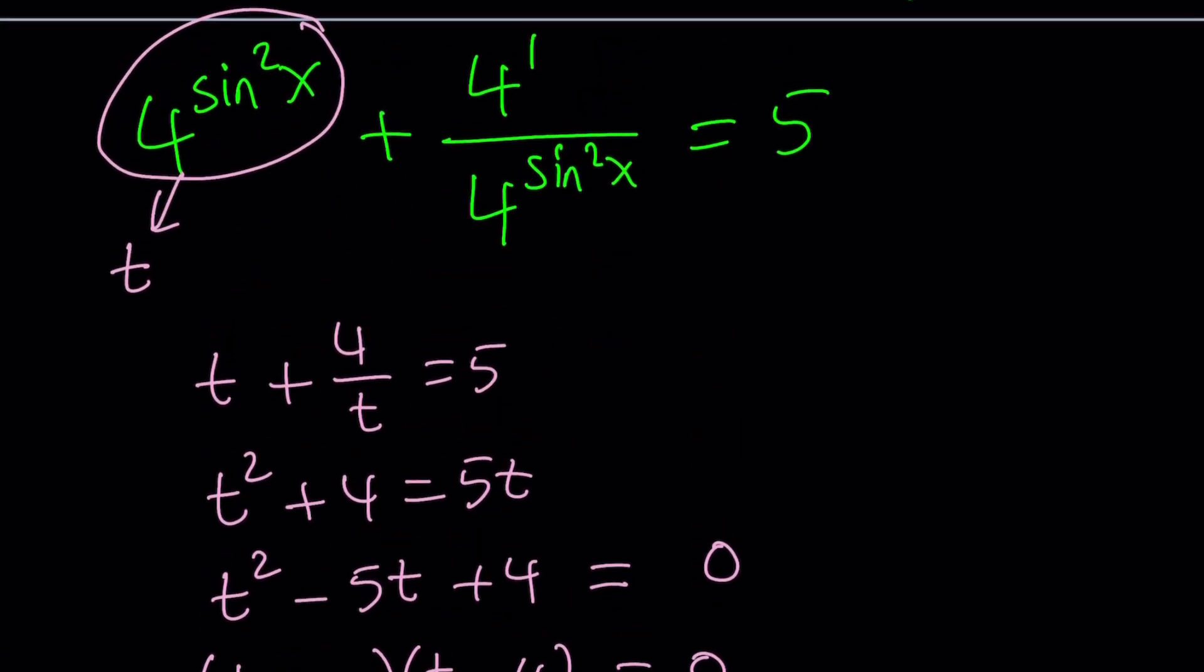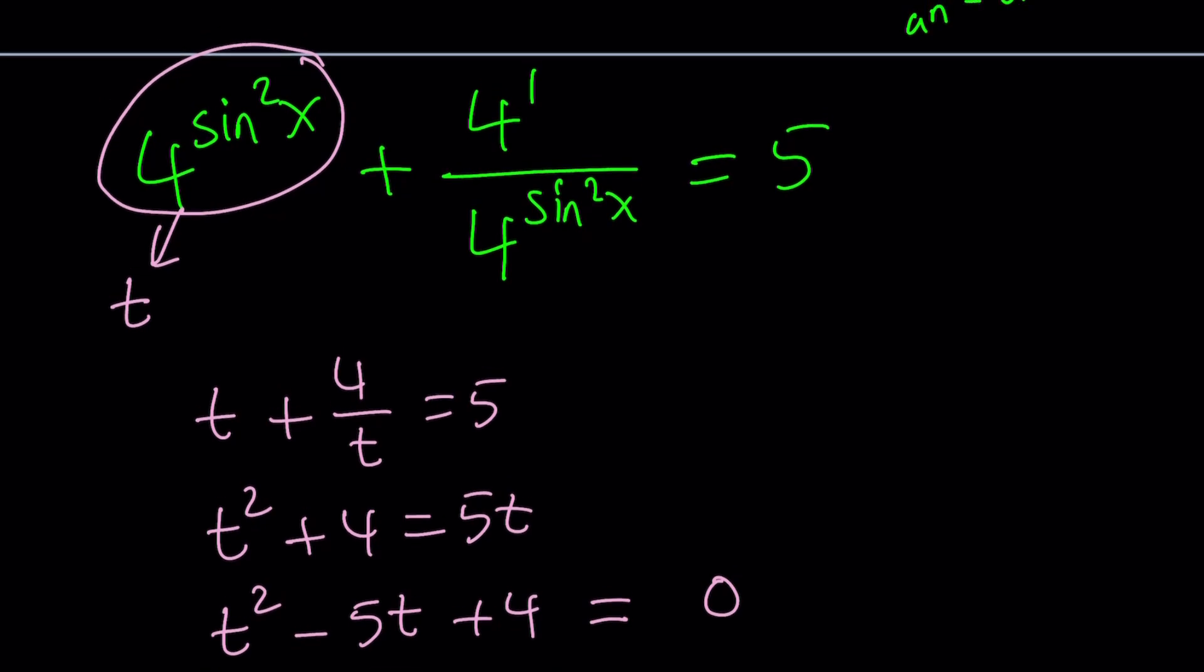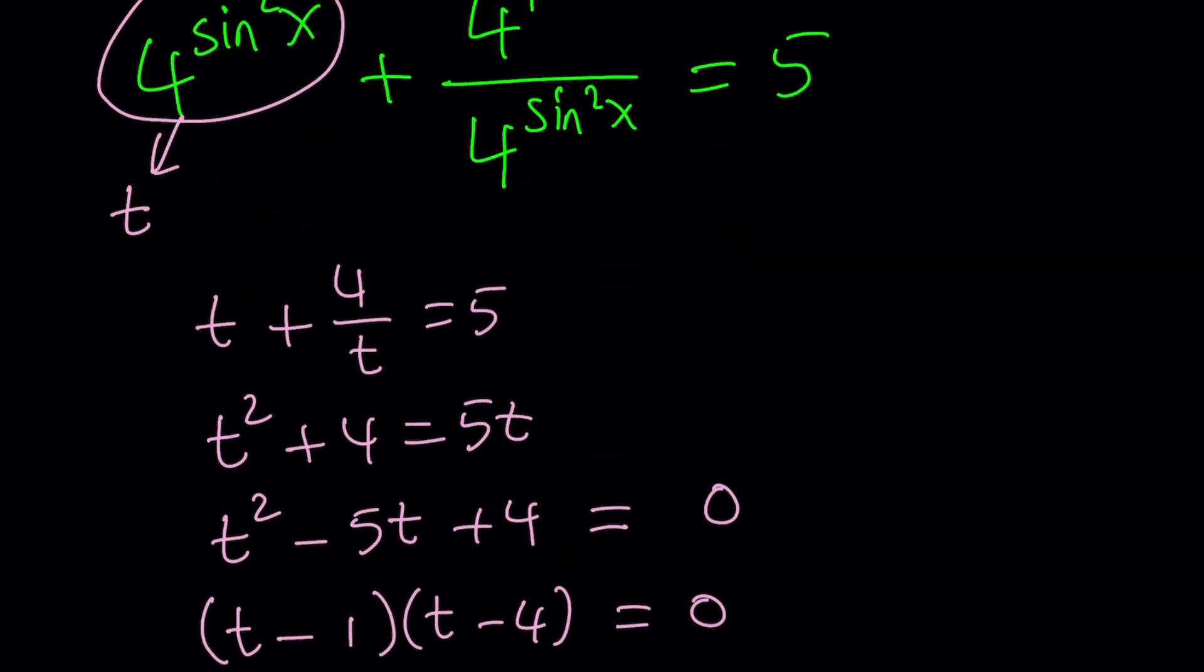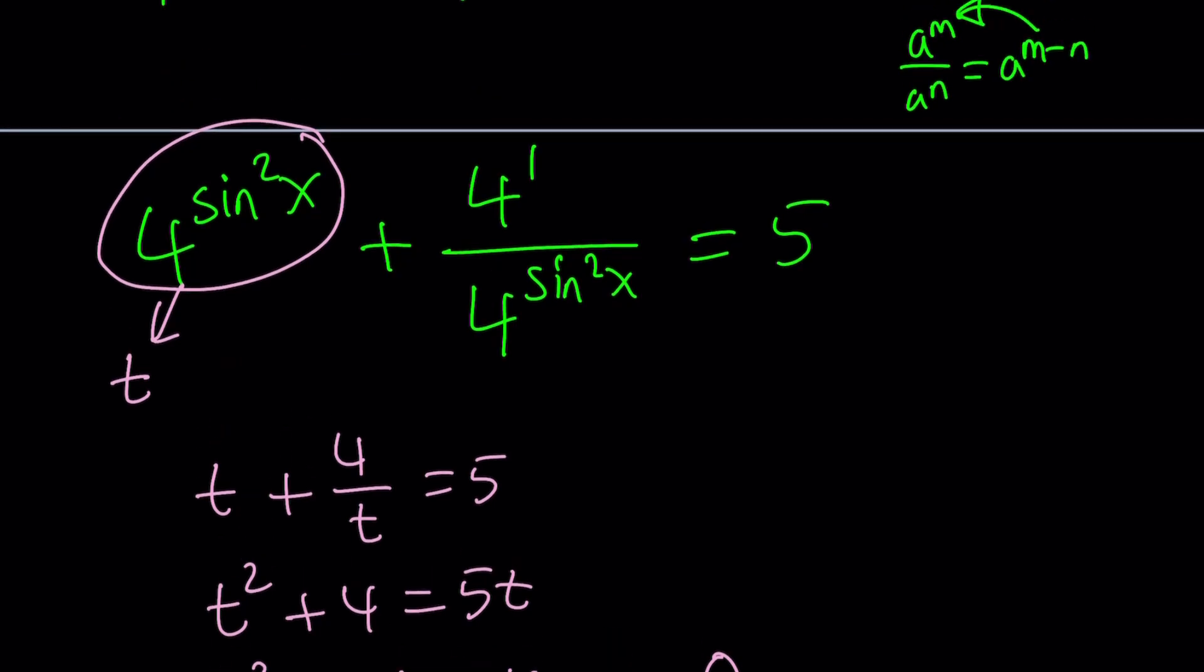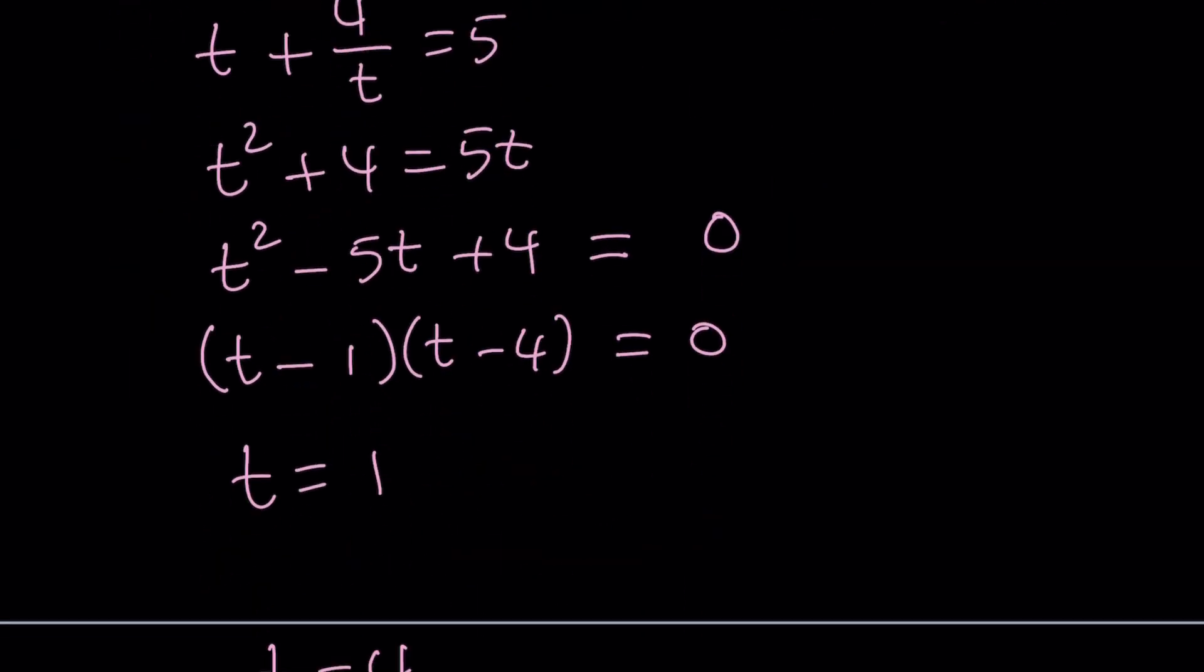t is 4 to the power sine squared x. So that's the power of substitution. You take something complicated, well, at least t is simpler than that, and then turn it into something simple. And then you solve, and then you get a back substitute. Don't forget to do that. And always keep track of things. That's why I kind of circle, box, take note on all these things.